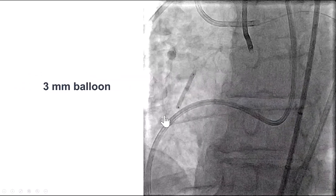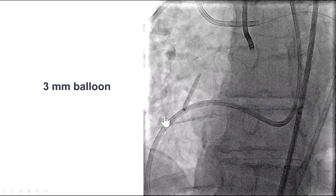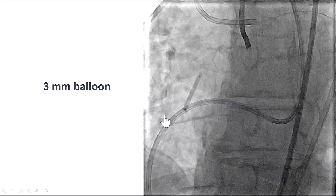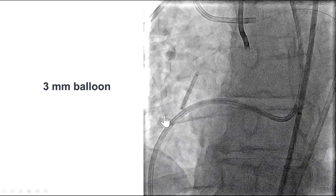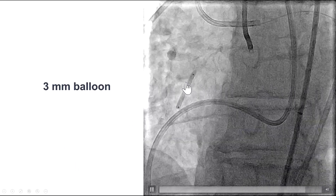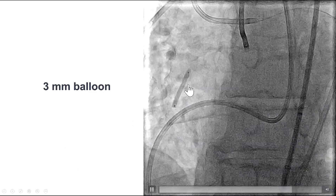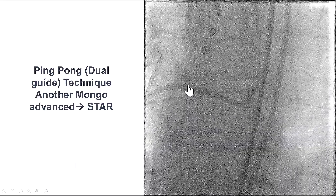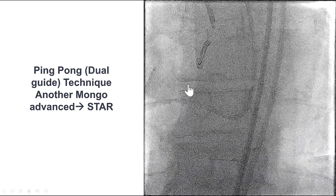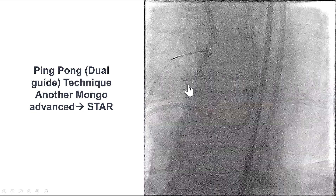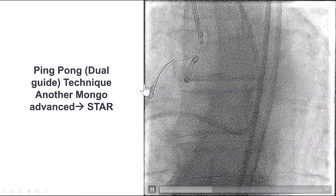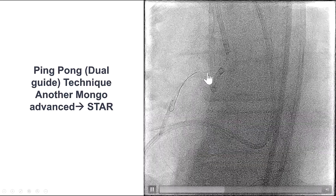We inflated a balloon. The next step in managing this essentially large vessel perforation — although it could involve a small vessel from the marginal — was to deploy a covered stent. We wanted to minimize the time that blood was flowing into the pericardium.